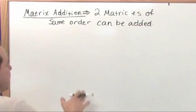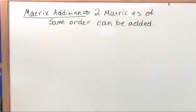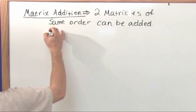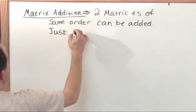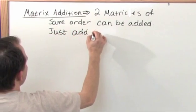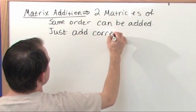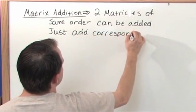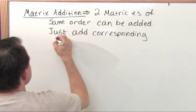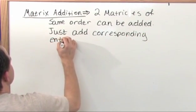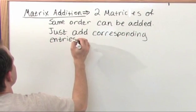That's exactly what I said a minute ago. They have to have the same size and shape. Remember, the order is just the number of rows and columns, so they have to have the same order to add them. All you do is add corresponding entries.